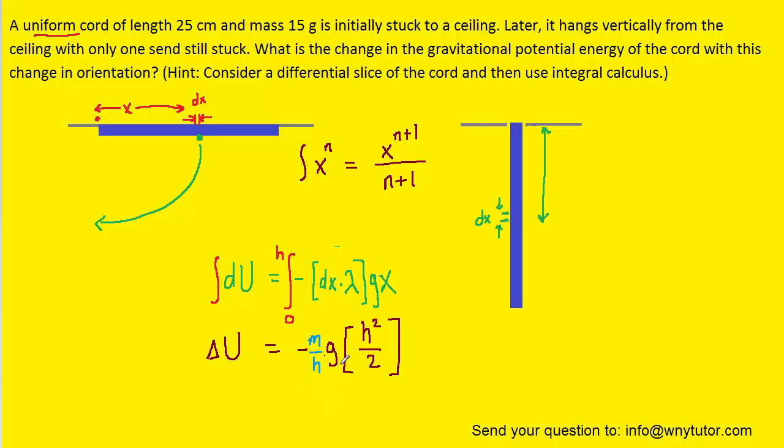And let's also recall that the lambda was defined as the mass of the cord divided by its full length, so we can substitute. And then we have an h in the denominator and an h in the numerator, which can cancel, so we can take that one out, leaving just h in the numerator. And now we have a pretty well simplified expression. It's basically negative mgh divided by two.